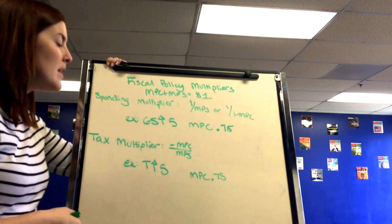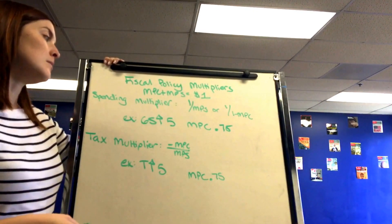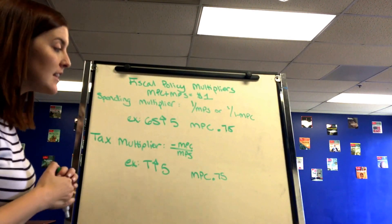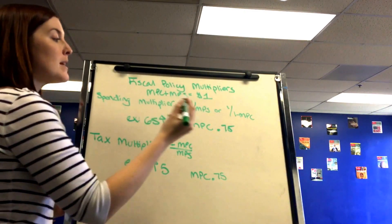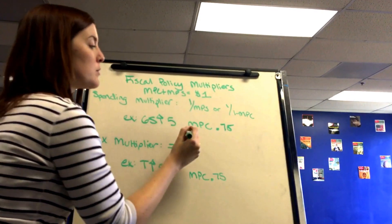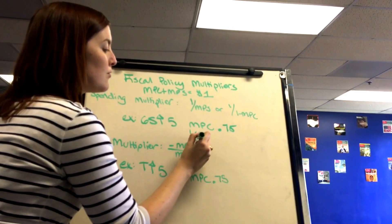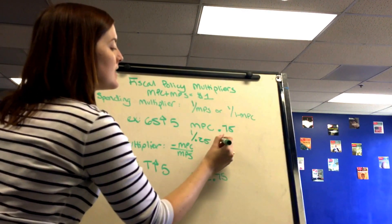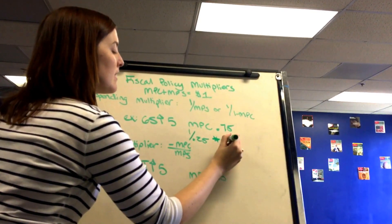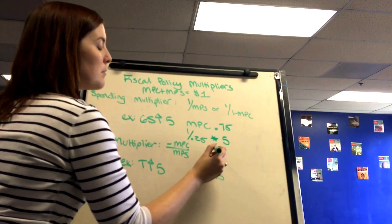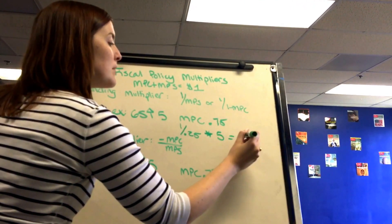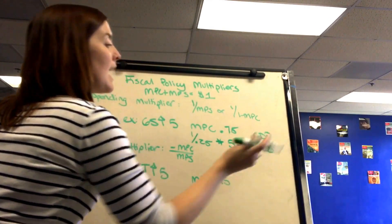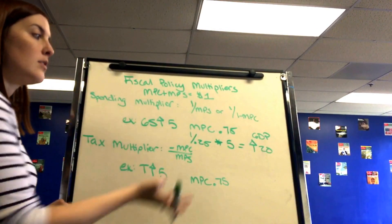The spending multiplier calculates how much GDP can increase based on how much consumers spend versus save. The formula is 1/MPS, or equivalently 1/(1−MPC). For example, if government spending increases by $5 million and MPC is 0.75, then MPS = 0.25, and the spending multiplier is 1/0.25 = 4. Multiplied by the $5 million change in spending, GDP increases by $20 million — an expansionary fiscal policy example.